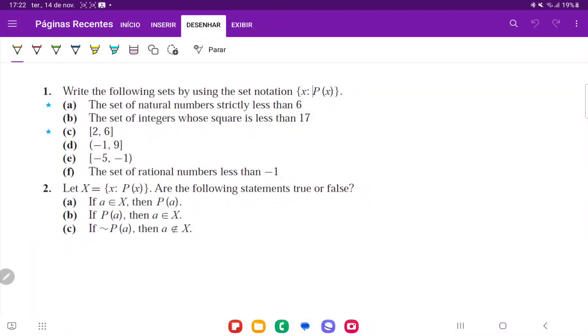So for number one we want to write the following sets by using set notation. So for item a we want to write the set of all natural numbers strictly less than six.